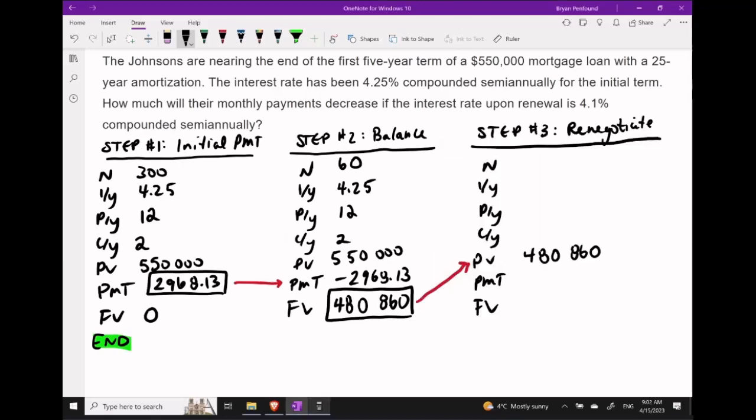Now what we're going to do is we're going to move into step three, the renegotiation phase for the mortgage. Let's take the current updated balance of $480,860 as the present value during the renegotiation period. So we're going to input this as a positive value here. We're going to keep on with monthly payments, and our new interest rate is now 4.1% compounded semi-annually instead.